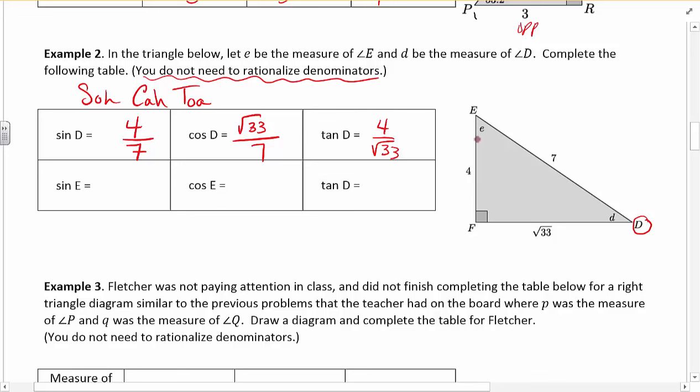All right, so now looking from the perspective of E. So now if I come up here, now opposite is the root 33. Adjacent is the 4. And hypotenuse is still 7. So sine is opposite over hypotenuse. Opposite root 33. Hypotenuse 7.